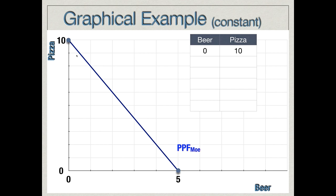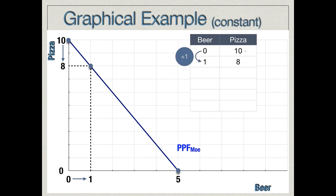Let's assume Mo is spending all of his time producing pizza — 10 pizzas and zero beers. Mo decides he wants to produce one beer instead. In order to increase beer production by one unit, some resources move toward beer and away from pizza, so pizza production falls. As you can see, when Mo increases beer production from zero to one unit, pizza production falls from 10 to 8. The opportunity cost of producing that one beer is the loss of two pizzas.